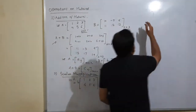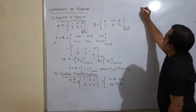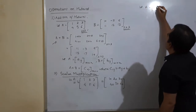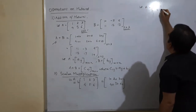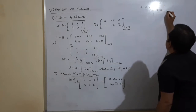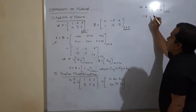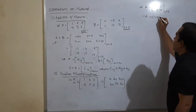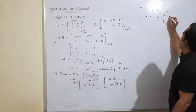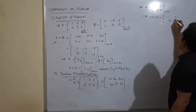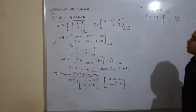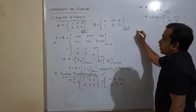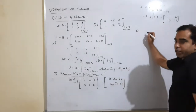So scalar multiplication means the number gets multiplied with all the entries. One more thing: suppose A = [1 2 / 3 4], a 2×2 matrix. Then −A means (−1) multiplied with A, so all entries change sign. This is called scalar multiplication.